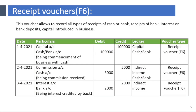Receipt Voucher F6. This voucher allows you to record all types of receipts of cash or bank, including receipts from bank, interest on bank deposits, and capital introduced in business. Tally prompts the user to record the credit amount first. For example: commence business with cash 1,00,000; received commission 5,000; 2,000 interest credited on bank deposits.